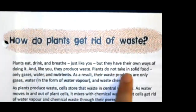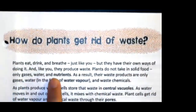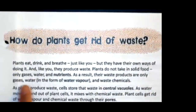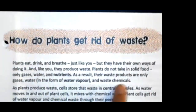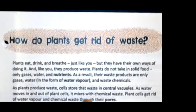Plants do not take in solid food, only gases, water, and nutrients. As a result, their waste products are only gases, water in the form of water vapor, and waste chemicals. As plants produce waste, cells store that waste in central vacuoles. As water moves in and out of plant cells, it mixes with chemical waste. Plant cells get rid of water vapor and chemical waste through their pores.